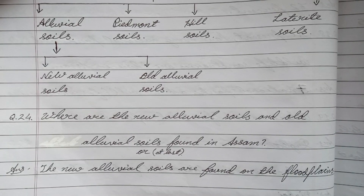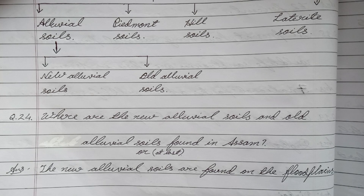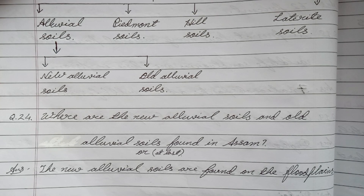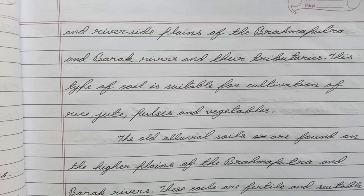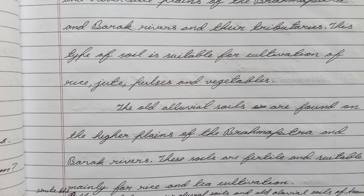Question number twenty-four: Where are the new alluvial soils and old alluvial soils found in Assam? Answer: The new alluvial soils are found on the flood plains and riverside plains of the Brahmaputra and the Barak rivers and their tributaries. This type of soil is suitable for cultivation of rice, jute, pulses, and vegetables. The old alluvial soils are found on the higher plains of the Brahmaputra and Barak rivers, and are fertile and suitable mainly for rice and tea cultivation.